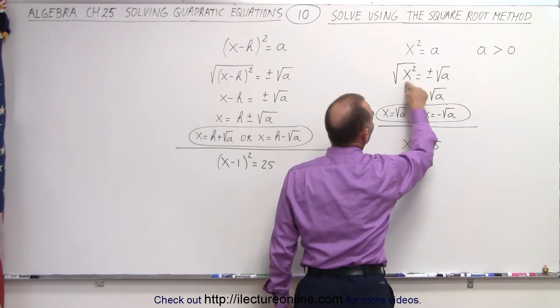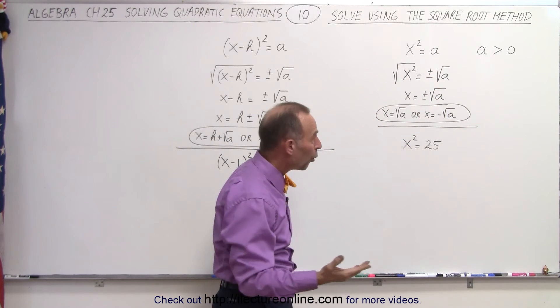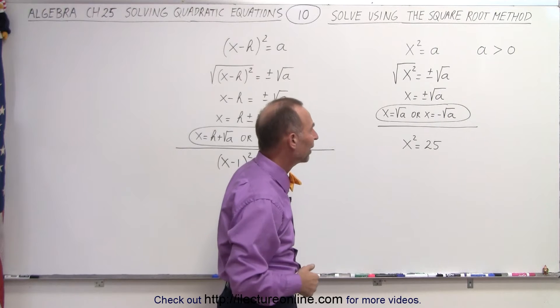We take the square root of both sides. Of course, on the right side, we have to have a plus and a minus because it could be the positive or the negative square root of the right side.